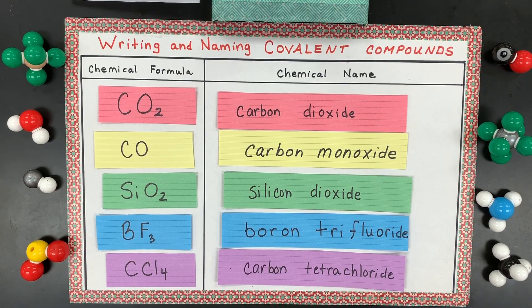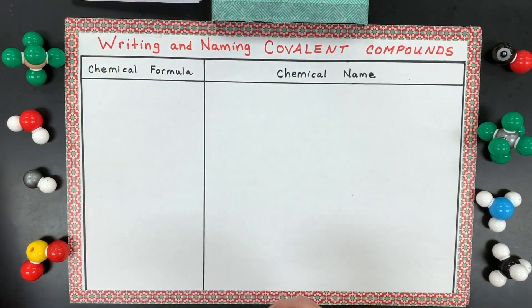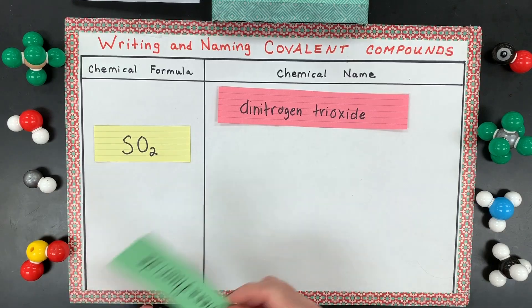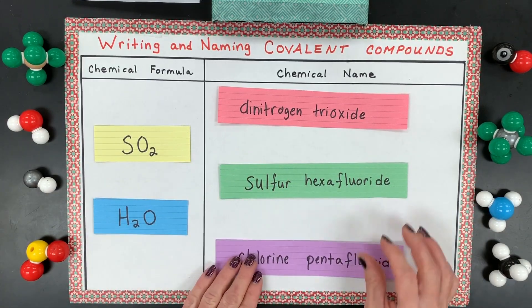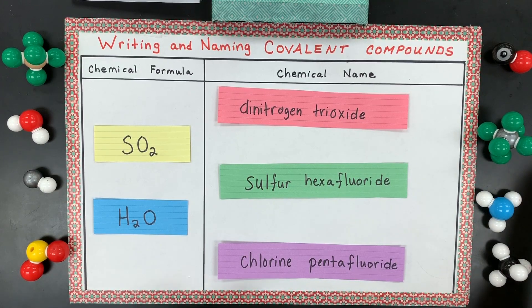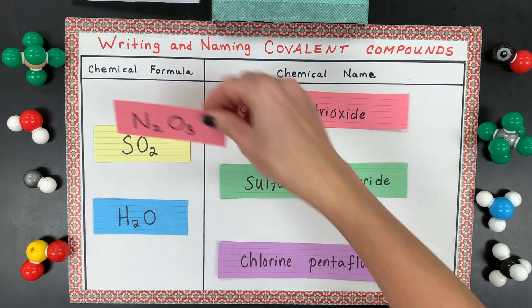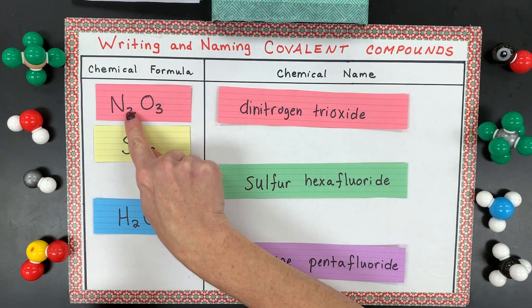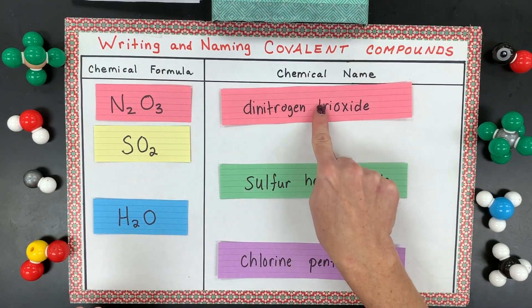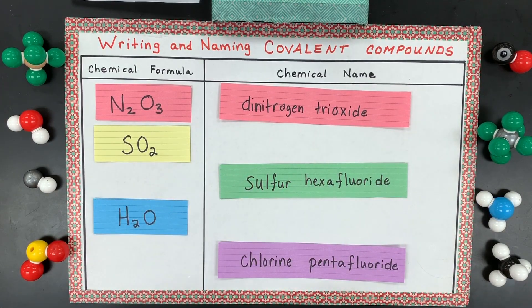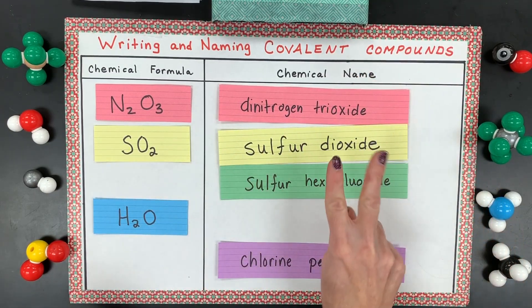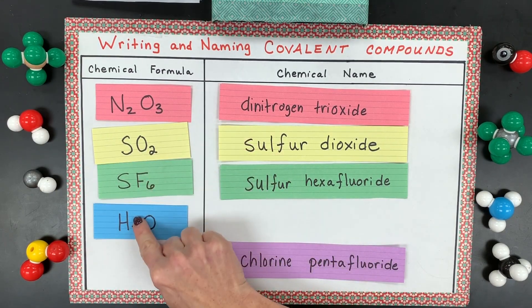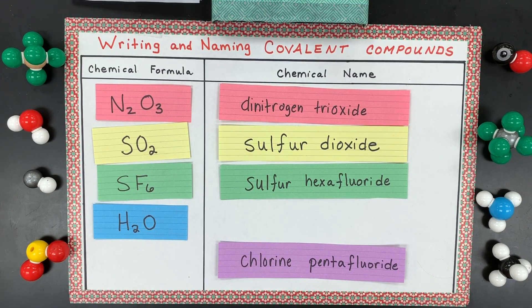Here's the next set — write them down and try the answers before I go through them. The first one is dinitrogen trioxide: we need a prefix because there are two nitrogens, and 'tri' for three oxygens, called oxide. Next is sulfur dioxide — one sulfur, two oxygens. Then sulfur hexafluoride: 'hexa' is a new prefix meaning six, so sulfur with six fluorines called fluoride.